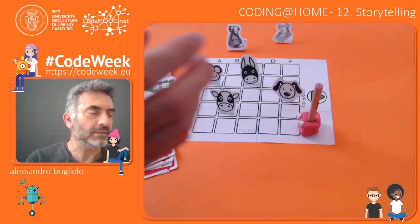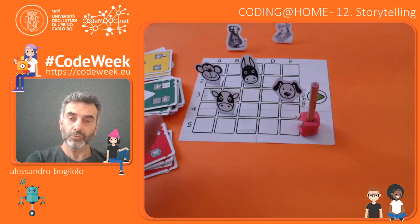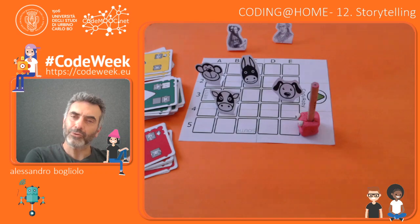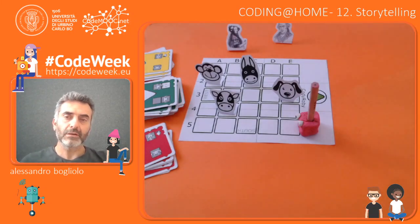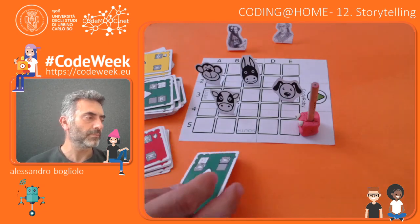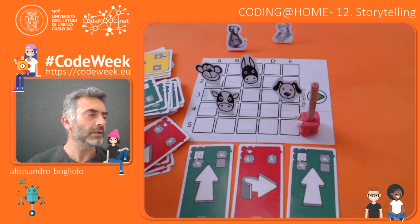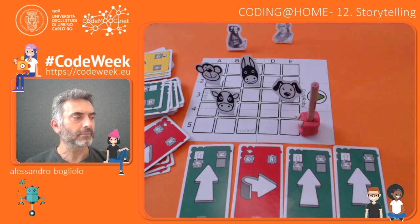Choosing a starting point like this one, for instance, depending on which character I want to introduce first, I have to find the path and code it in order to provide instructions to the robot, which is the one who is going to tell the story or introduce the characters. So I have to find a path that brings the robot to this character first. Let's assume for simplicity that the dog is the first character I want to introduce. In this case the robot has to move forward to step into the checkered board, then turn right, move forward, and move forward again in order to step into the square where the dog is. And only at that point the dog will be introduced into the story.